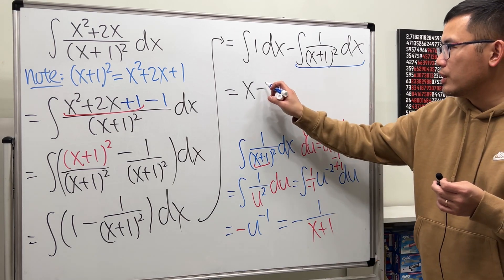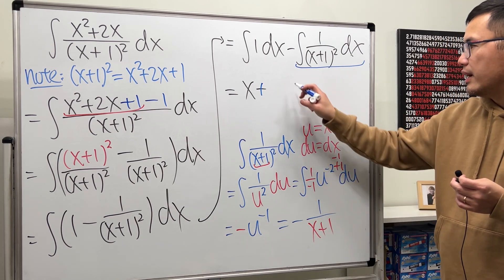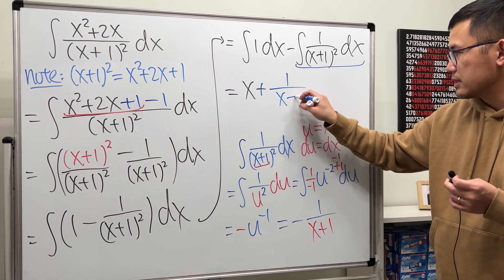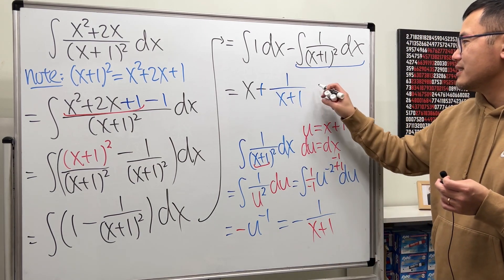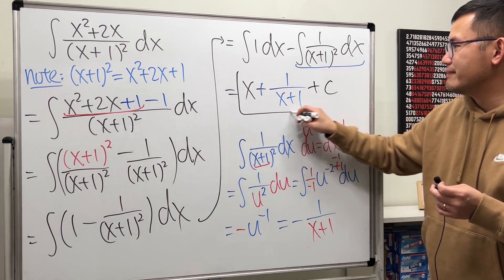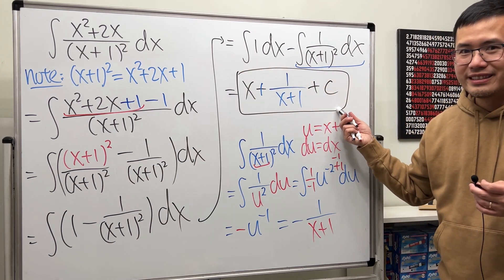So negative times negative, we get the positive here. And then we have the 1 over x plus 1. Right here, this is the place to put a plus c. So that's it.